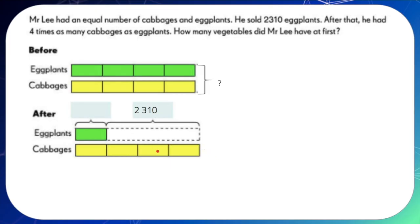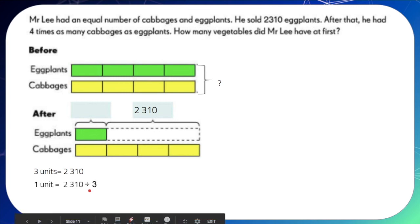We know that there are three units which is equal to 2,310. If we get one unit, we can also get the number of eggplants that were left. So, let's try doing that one. So, three units is equal to 2,310. So, to find out one unit, simply divide it by three and you will get 770. So, this represents the number of eggplants.